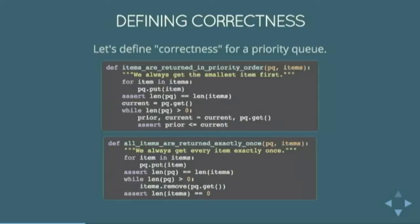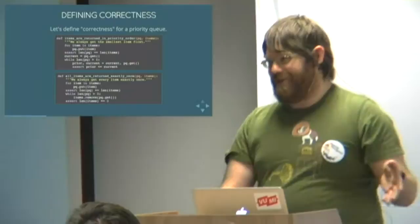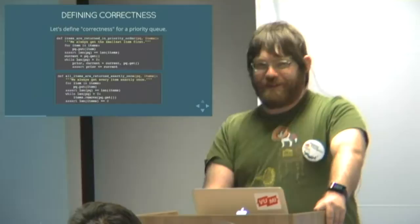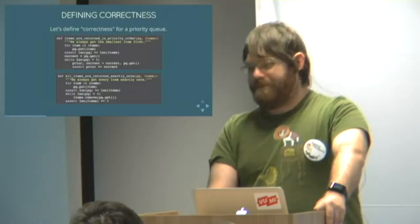Then there's the queue part. A queue, one of the properties of a queue is that everything you put into it is returned exactly once. If you put three things in you'll get those same three things out. So the test for that is pretty straightforward. You put everything into the queue. You then take it all out again. And every time you take something out you check that it was one of the things you put in and then throw that away. And then at the end you should have nothing left. So those two properties together that defines a priority queue.